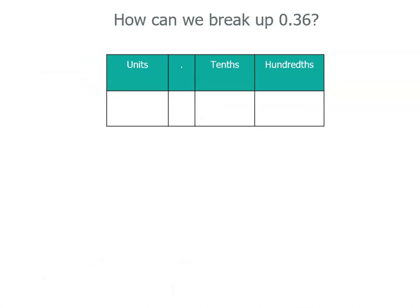Now let's have a look in our place value table. There's our 36 hundredths. Let's write it in fraction form. There's our 3 tenths, and there's a 3 in the tenths place. There's our 6 hundredths, and there's a 6 in the hundredths place.